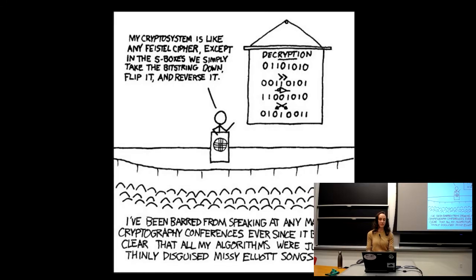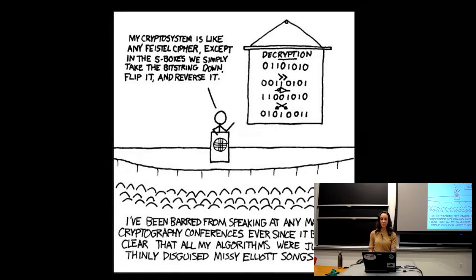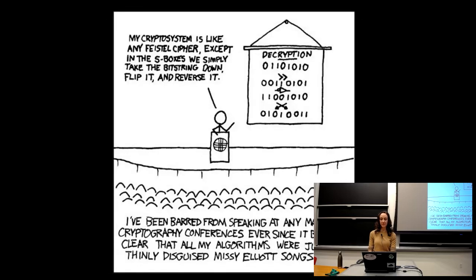And I want to start with a comic. This is from XKCD. The presenter is introducing their crypto system, and they say it's like any Feistel cipher, except in the S boxes, we simply take the bit string down, flip it, and reverse it. The caption is, I've been barred from speaking at any major cryptography conferences ever since it became clear that all of my algorithms were just thinly disguised Missy Elliott songs. So obviously this is a joke, but as you'll see with some of the encryption algorithms that we'll talk about, often it does just kind of look like taking these bits here, putting them here, flipping them around.